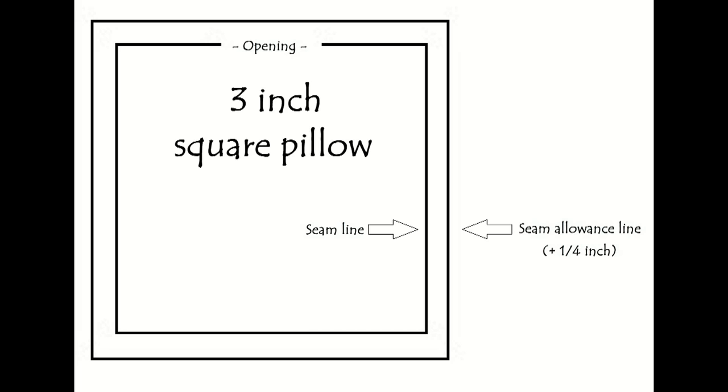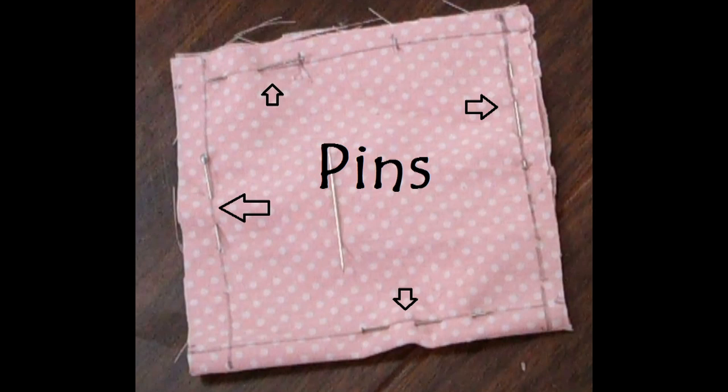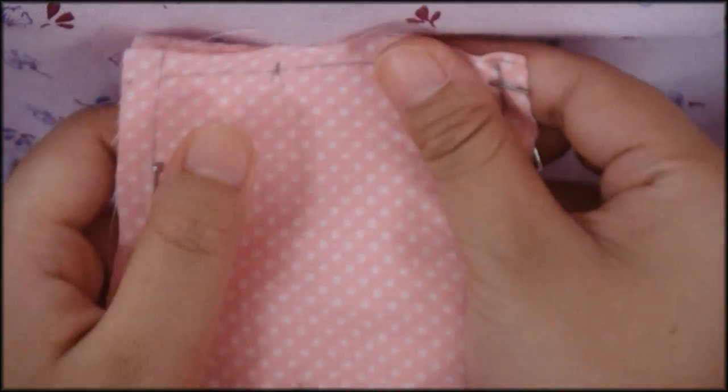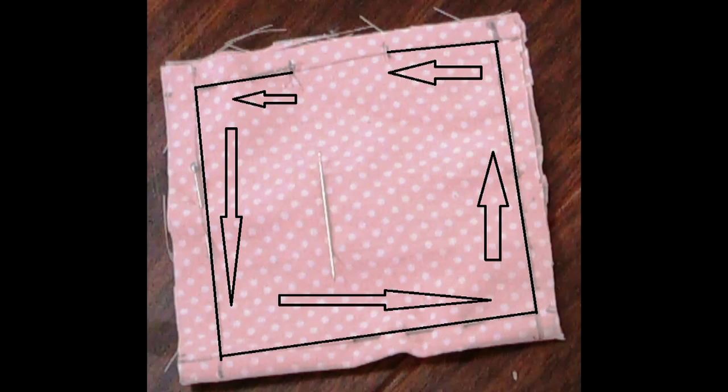Prepare for sewing by marking that three inch square using a pencil and pinning along where you're going to sew. Be sure to mark an opening in one of the sides. It's one inch from either side, an opening where we're not going to sew, so we can flip the pillow inside out and stuff it later on.